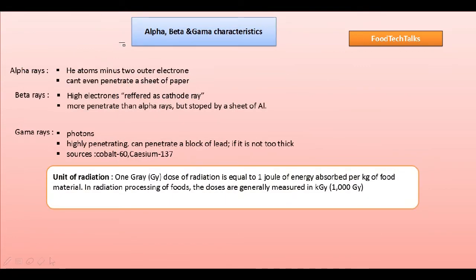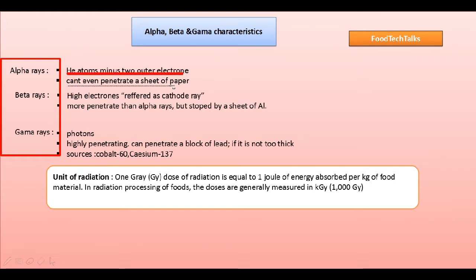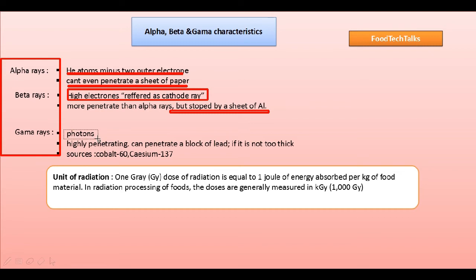Let us see the difference between alpha, beta, and gamma rays. Alpha rays are helium atoms minus two outer electrons; they cannot even penetrate a sheet of paper. Beta rays are high-energy electrons, also referred to as cathode rays; they are more penetrative than alpha rays but can be stopped by a sheet of aluminum. Gamma rays are photons; they are highly penetrating and can penetrate a block of lead if it is not too thick. The sources of gamma rays are cobalt-60 or cesium-137.